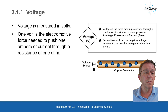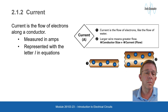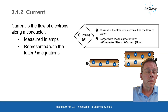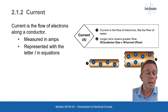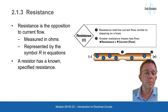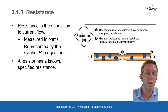One volt of electromotive force is needed to push one ampere of current through one ohm of resistance. Current is the flow of electrons along a conductor, measured in amps, represented with the letter I in equations. Resistance is the opposition to current flow measured in ohms, represented with the symbol R in equations.